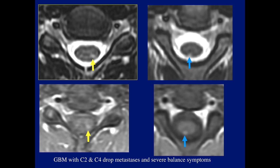Another case: a patient with GBM had C2 and C4 drop metastases and severe balance problems. There is involvement of the central gray but also involvement of either the fasciculus gracilis or cuneatus, explaining why the patient had severe balance symptoms. By knowing which structures are there, we can demonstrate clinical acuity.